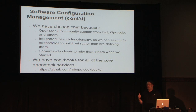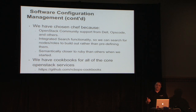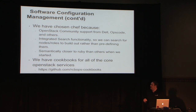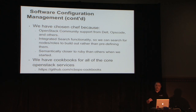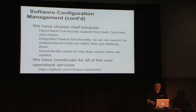We have cookbooks for every one of the core services, and as new core services come on, we add cookbooks very quickly. We keep those maintained through releases — we're going through a cycle right now upgrading everything from Folsom to Grizzly. We do make them available, so if you're running Chef and want to check this out, you're more than welcome to.